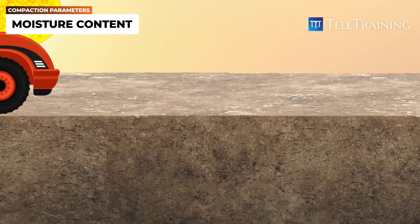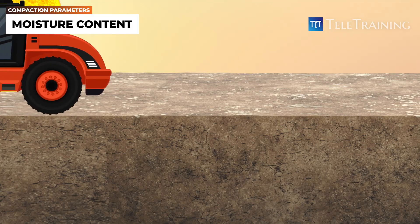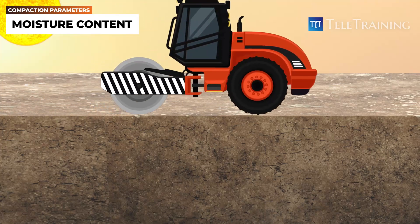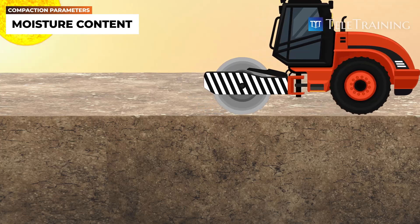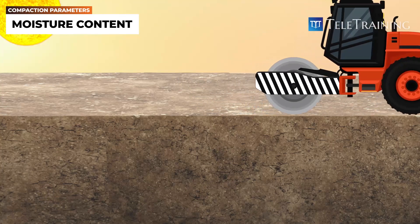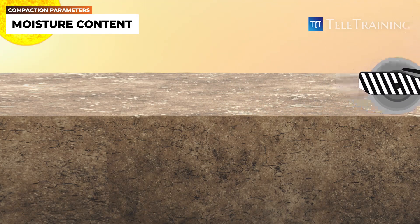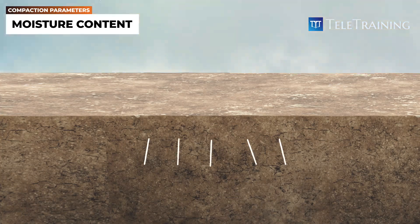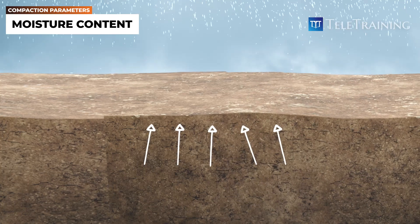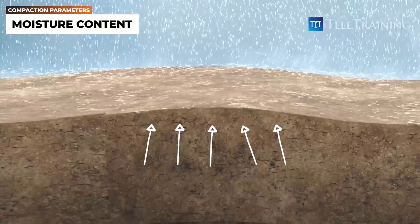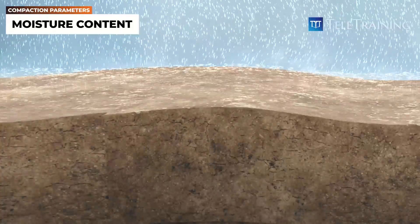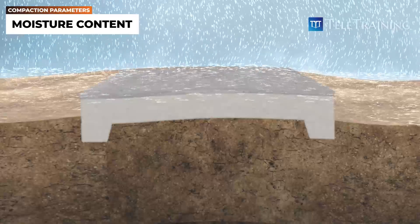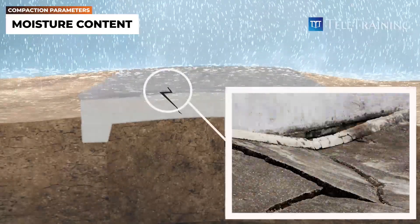One common issue that occurs during soil compaction operations is when the soil is compacted while it's too dry — in other words, it has a moisture content much lower than the optimum. In such cases, the soil is vulnerable to swelling when moisture content increases in the future, such as after rainfall. This swelling can potentially damage any structure on the surface.